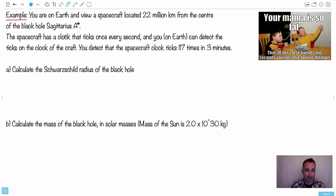The spacecraft has a clock that ticks once every second, which means if you're in a spaceship, you have a clock and it ticks every second. But the person on Earth, you can detect the ticks of the clock of the craft. So somehow you can tell what the clock is doing. Obviously, that's a little bit difficult, this is the contrived part of it. You detect that the spacecraft clock ticks 117 times in three minutes. So the question is, what's the Schwarzschild radius?